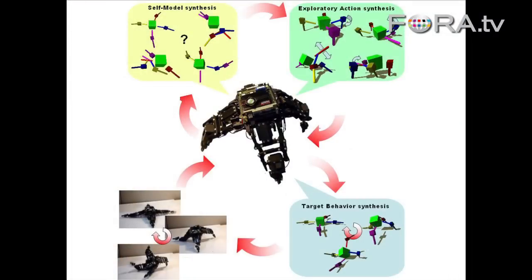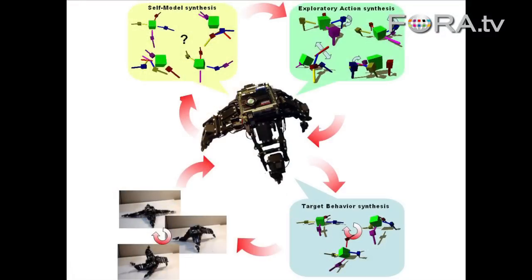Here comes the really tricky step. It then looks for the next action to do — the one that causes the most disagreement between predictions of these models. Why the most disagreement? It's like a scientist designing an experiment that causes the most disagreement between predictions of two competing theories. Because then the result from that experiment will refute at least one of the theories. Within a relatively small number of these babbling actions, it will figure out what it looks like. And with that self-model, it can figure out how to move.